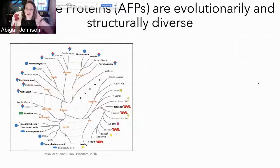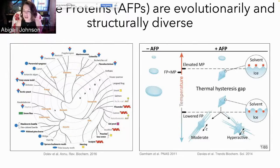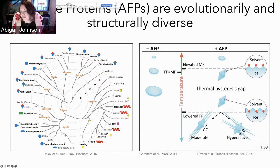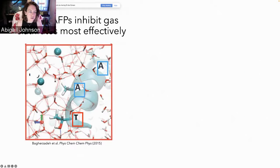The purpose of all these AFPs in these organisms is to bind to nucleating ice crystals to allow organisms to survive at sub-zero temperatures — it doesn't allow the crystal to grow larger. AFPs are structurally diverse and evolutionarily diverse. Here's a tree of life where symbols represent different AFP structures found in fish, insects, plants, bacteria, etc. The proteins lower the freezing point and slightly elevate the melting point because when the proteins bind near each other on one plane of the ice crystal, a localized curvature occurs that makes it less thermodynamically favorable to add more ice.